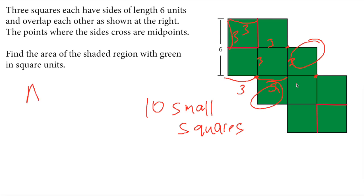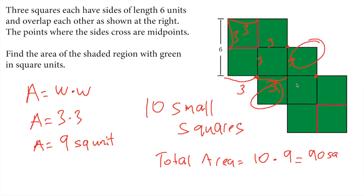So the area of the small square will be—area formula is width times width. Area equals 3 times 3, and every individual square is 9 square units. So we have 10 of those small squares. That means total area, total green area, 10 times 9 equals 90 square units.